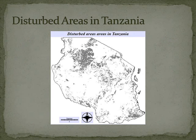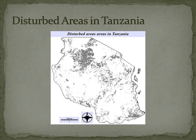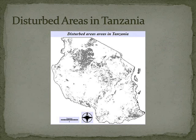Tanzanian communities rely on agriculture for food sustainability. Therefore, large amounts of land all over the country have been disturbed, meaning they have been altered from their natural state. This map shows both areas of crops and artificial surfaces such as concrete layers.